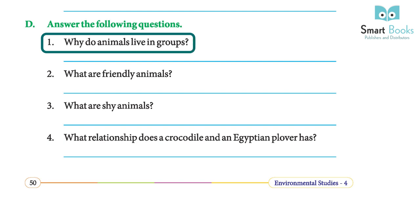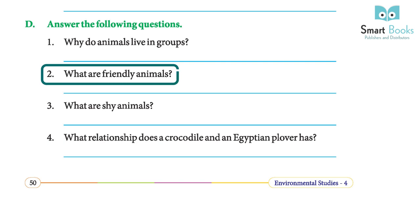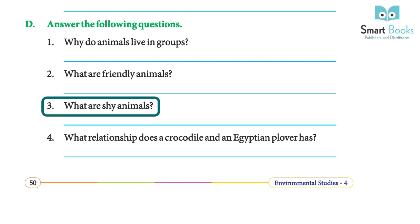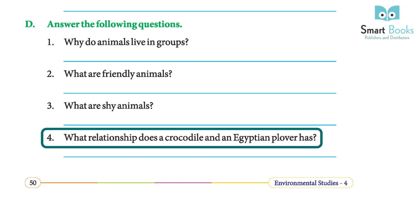Why do animals live in groups? Animals are social by nature and move around in groups to find food and water, protect themselves from enemies, and bring up their young ones. Friendly animals allow us to go near or feed them. Shy animals run or hide when they see people coming near them. The Egyptian plover feeds on bits of decaying meat stuck in the teeth of the crocodile — the plover gets food and the crocodile gets its teeth cleaned.